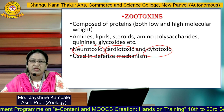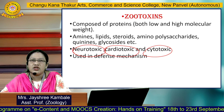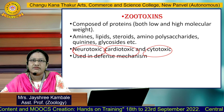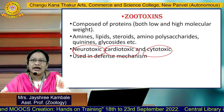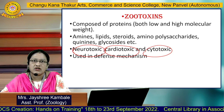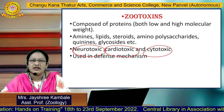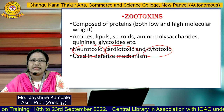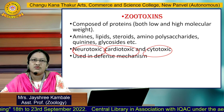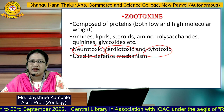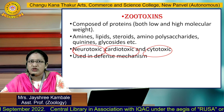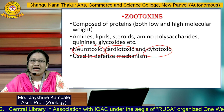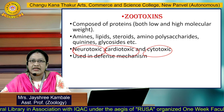Usually, these toxins are neurotoxic, cardiotoxic, or cytotoxic. Neurotoxic refers to a toxin which mainly affects the nervous system. Cardiotoxic is a toxin which mainly affects the heart. And cytotoxic mainly attacks the cell. These Zootoxins are secreted and used in the defense mechanism.